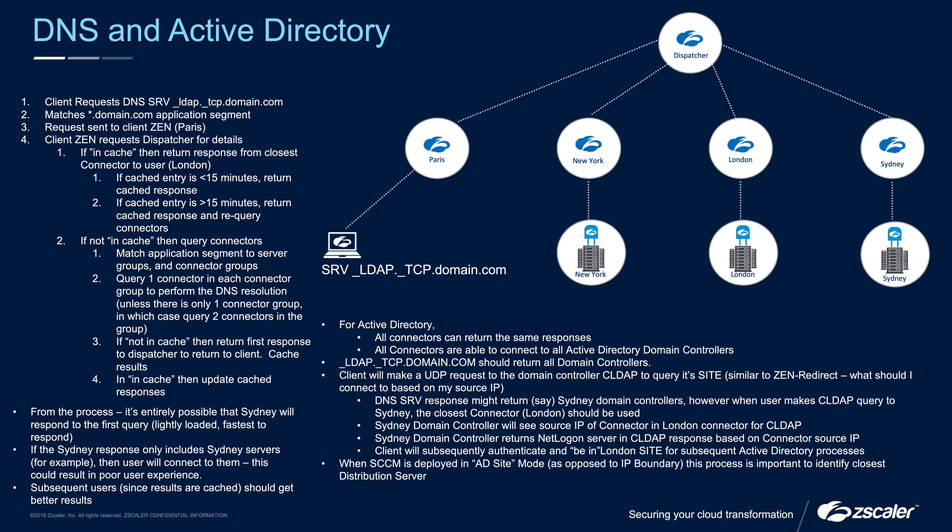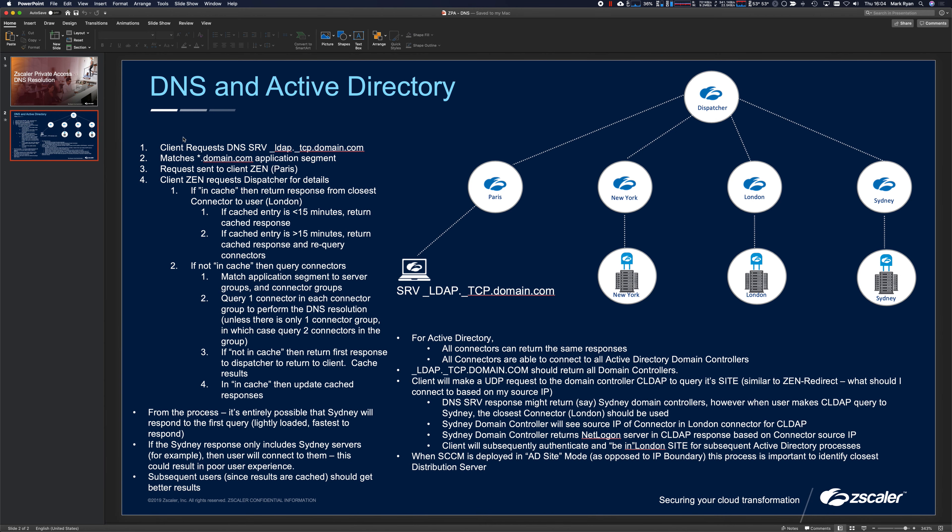After the user connects to the domain controller via CLDAP and LDAP on port 389 TCP/UDP, they need to retrieve group policy. This is where RPC — Remote Procedure Call — comes in. Let's jump into the administration interface to run through this.